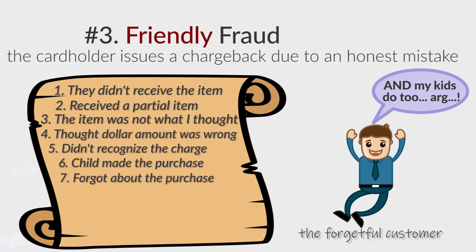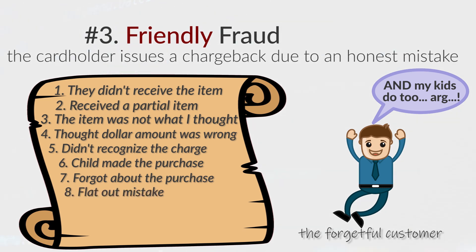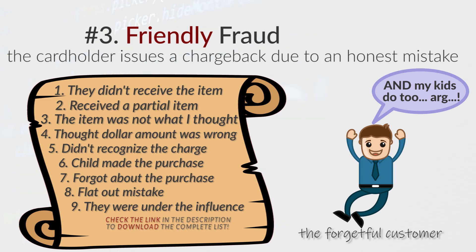Number seven: they forgot that they bought it, or someone else was authorized to use their credit card but didn't tell them a purchase was being made. This could happen when one family member makes a purchase and doesn't tell someone else, like a spouse or a parent. Number eight: they made a flat-out mistake or were confused about what they were actually buying. And number nine: they were under the influence or made a purchase they had no recollection of.